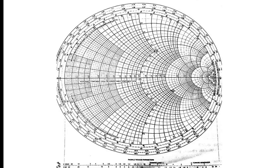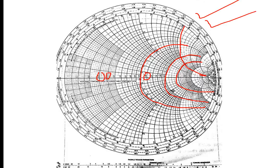Here you can see a complete Smith chart. These are the constant R circles, many of them with certain values — for example, 0.3 and 0.4 are there. At the same time, these are the constant X circles — these arcs. On the upper side these are positive arcs and on the lower side these are the negative arcs. So Smith chart is the superposition of these constant R circles and these X circles.